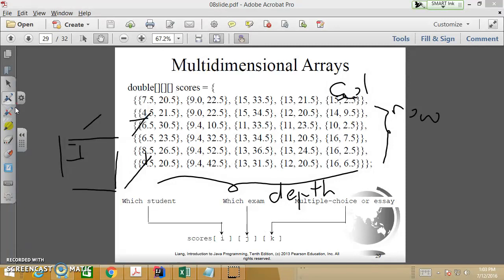Right, so when I said row, this is a row. And here's the column. And for here, this is the depth, right? In the 3D format, like cubics, right?